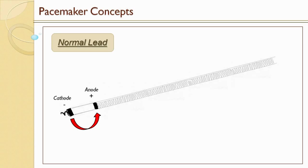When we measure the impedance of a good functioning lead, we'll typically get an impedance of 300 ohms to 1500 ohms. Every lead is a little different and they're manufactured to have a different normal impedance, but typically 300 to 1500 will usually suggest that the lead is normal or functioning properly.